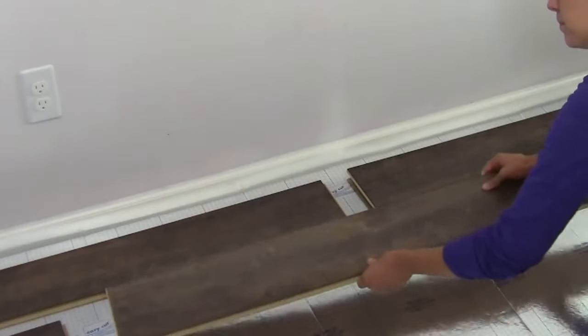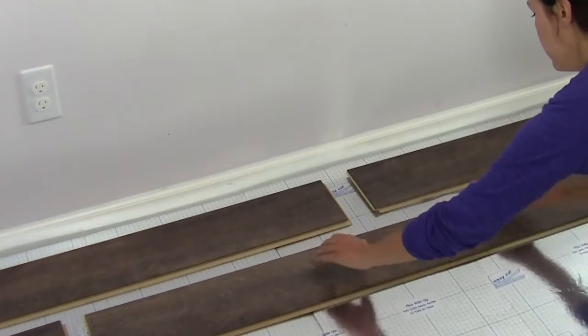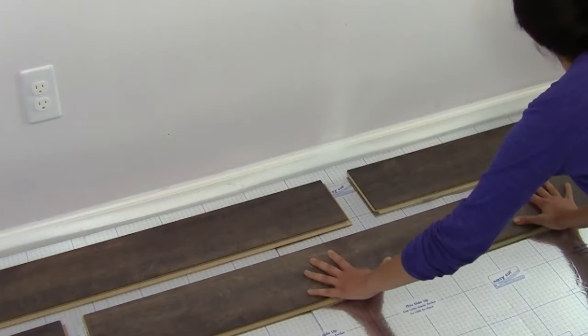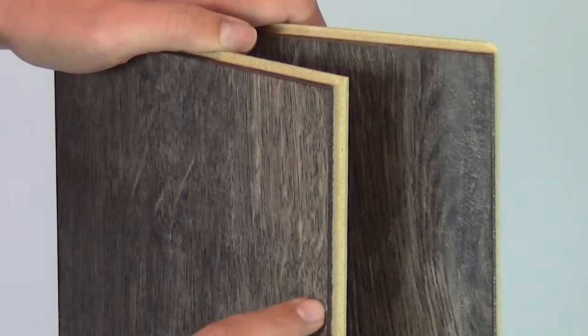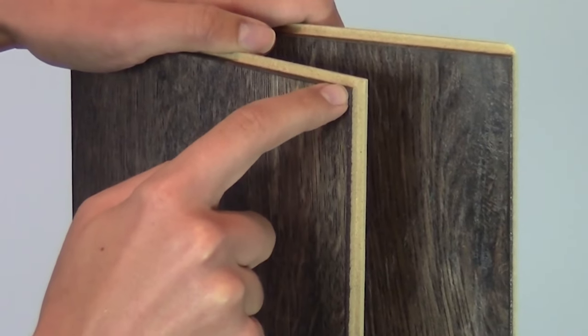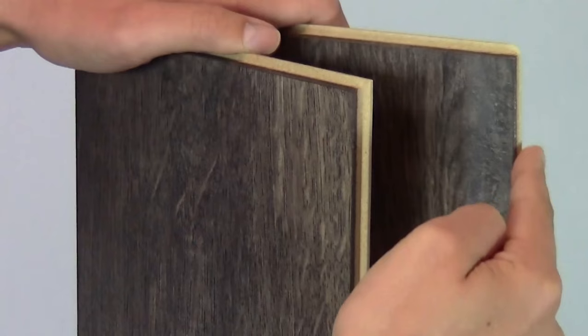Start your planks along the longest wall in your room by arranging the first two rows so that the wood grain pattern does not repeat itself. The tongue side goes against the wall, but only after you use your saw to remove the tongue.